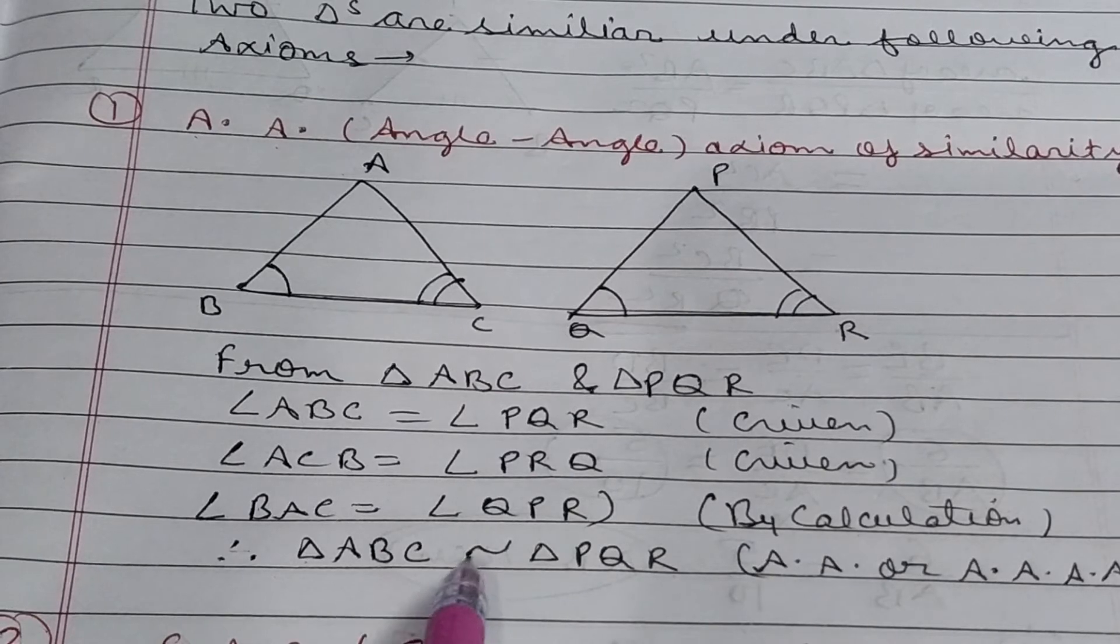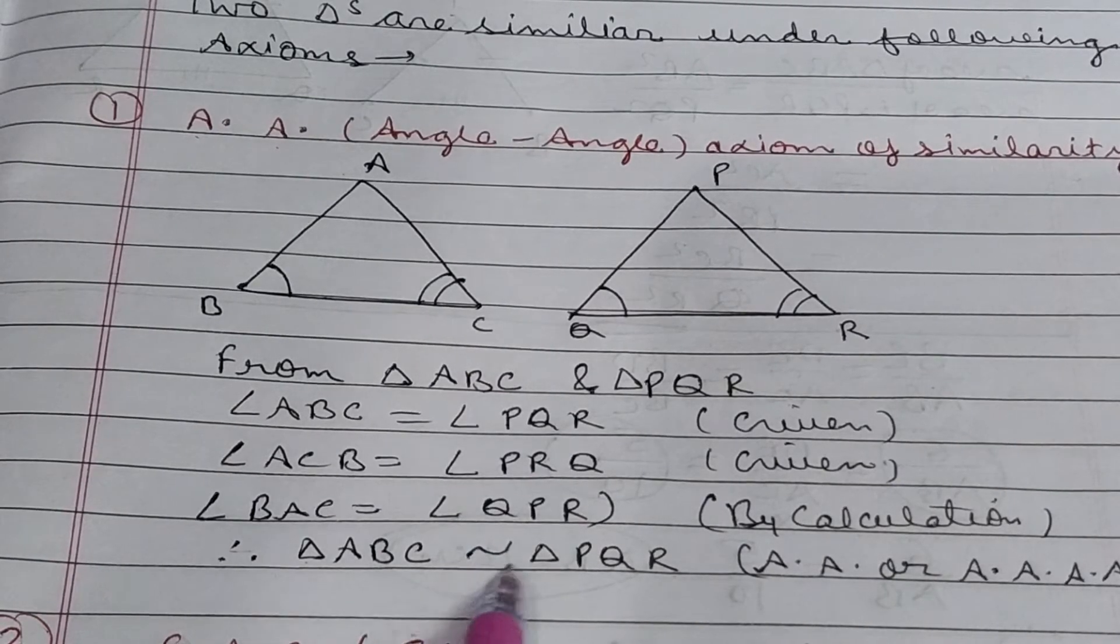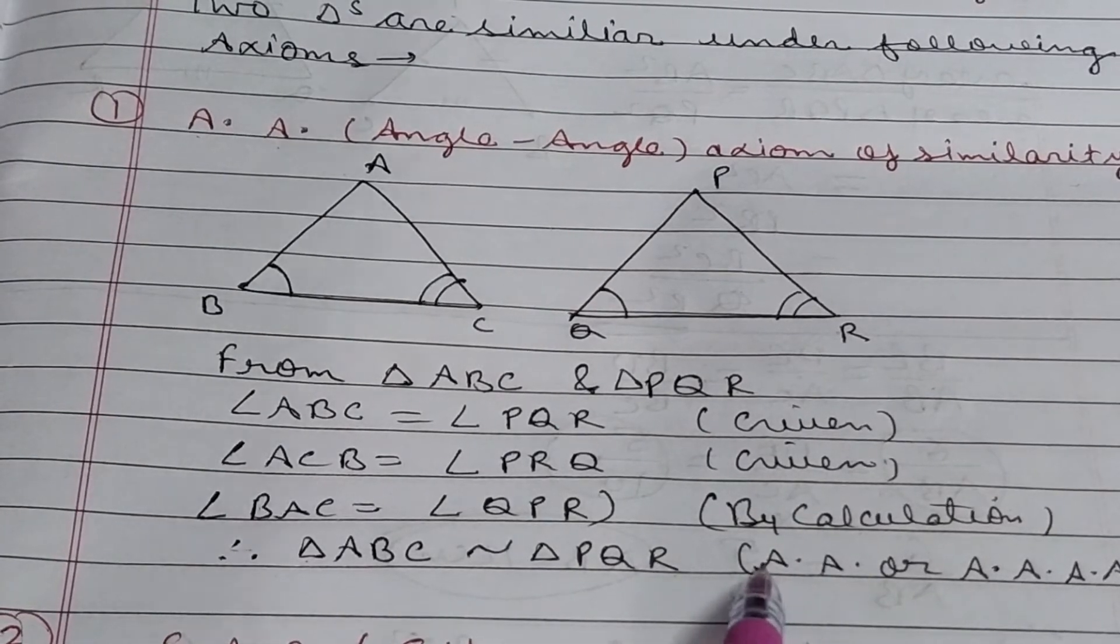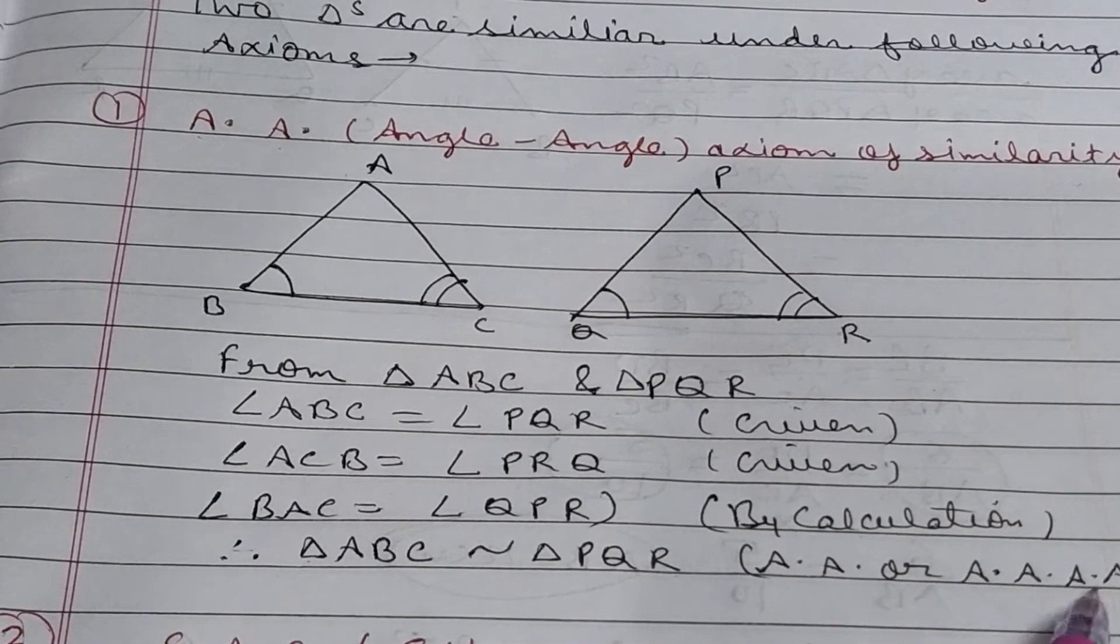In congruent triangle, you will have double mark below this, like equal to marks. So, these two are equal by the property of AA or triple A axiom.